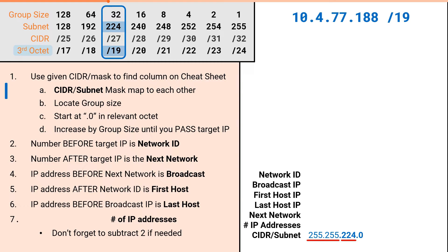Every value to the left of the pertinent subnet value will always be 255, and every value to the right will always be 0. Next we will locate the group size, which for us is 32, and we will increment by this value in the relevant column. Since the slash 19 is in the third octet, the third octet is our relevant column. This is the column we will use for our increment, starting from .0 in sets of 32 until we pass the target of 77.